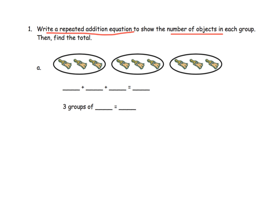The directions say: write a repeated addition equation to show the number of objects in each group. We're looking and we see three groups, and there are three brushes in each group, so this would be three plus three plus three. We can count those up and get nine: one, two, three, four, five, six, seven, eight, nine. Some students might be able to skip count — three, six, nine — and that's great.